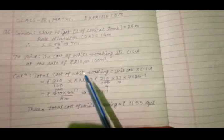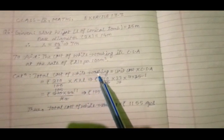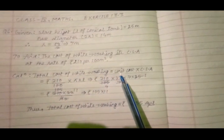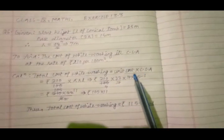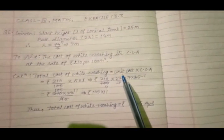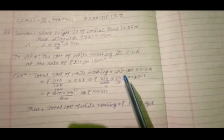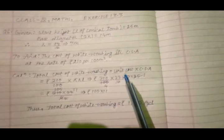Here the total cost of whitewashing the CSA of conical tomb we could calculate as product of unit cost and CSA. Here by unit cost we mean the cost to be paid for whitewashing 1 square meter of that tomb.